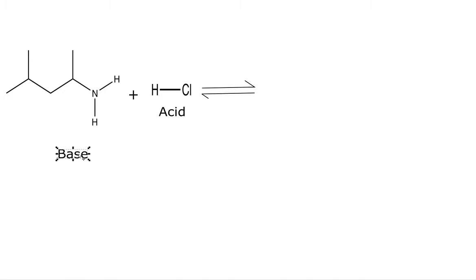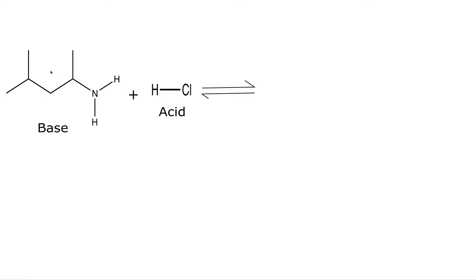So what do acids do? Acids donate protons, and bases accept those protons. A base needs to have a lone pair to create a bond. So where is our lone pair on this molecule? The only place we have a lone pair is on this nitrogen.